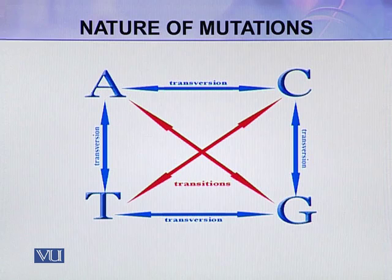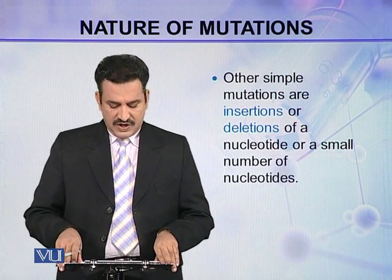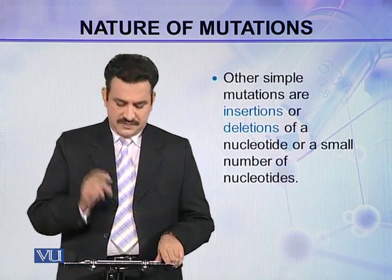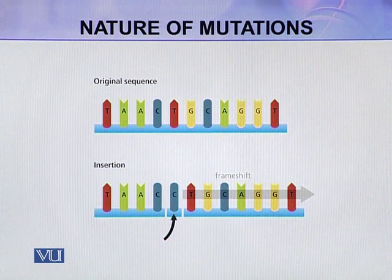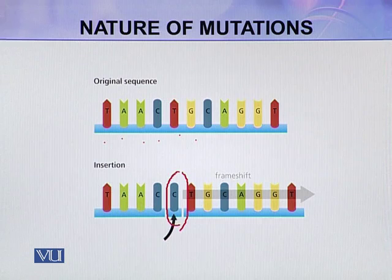Other simple mutations are insertions or deletions of a single nucleotide or a small number of nucleotides. For example, here you can see the sequence T, A, A, C, T, G. This is an insertion where this C was not present in the original sequence but has now been inserted.